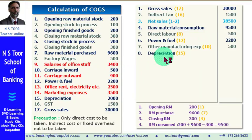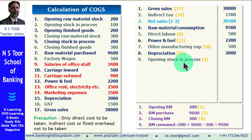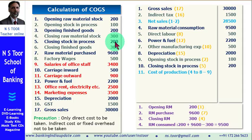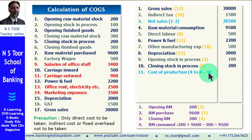Then we add depreciation, item number 15, which is 2,000. Next, we add opening stock in process, item number 2, which is 100. Then we deduct closing stock in process, item number 5. Now we can calculate cost of production. Items 4 through 8 are all added together, and then closing stock in process (item 9) is deducted. This gives us the cost of production of 14,600.